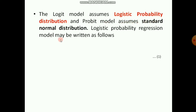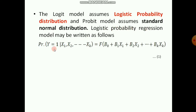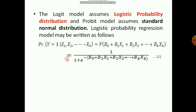For estimating the willingness to purchase, or the probability of purchase, with respect to the above mentioned socio-economic variables, you may apply the logistic regression model or the probit regression model. The logit model assumes a logistic probability distribution and the probit model assumes a standard normal distribution. The logistic probability regression model may be written as: P(y | x1, x2, ..., xk) = f(b0 + b1*x1 + b2*x2 + ... + bk*xk), which equals 1 / (1 + e^(-(b0 + b1*x1 + ... + bk*xk))).